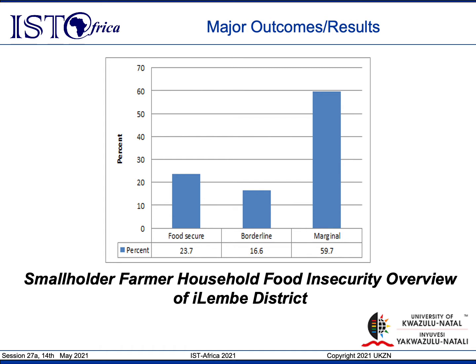In order to successfully understand the impact of ICTs on smallholder farmer household food insecurity status in Ilembe, it was important to begin by benchmarking their food insecurity status. The results show that 23.7% of the total sample of farmers were food secure. However, 16.6% of these farmers were borderline and 59.7% were marginally food insecure.